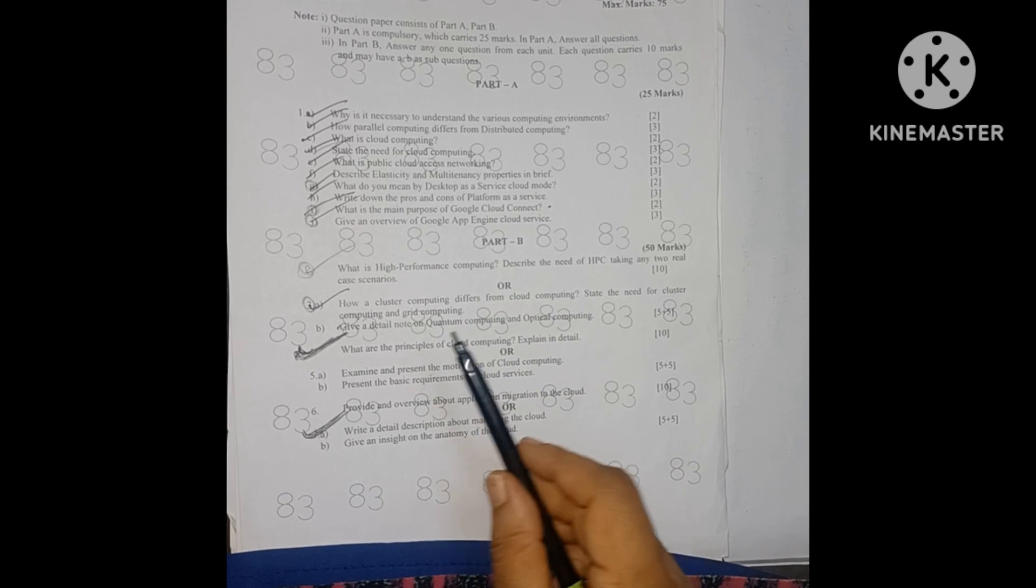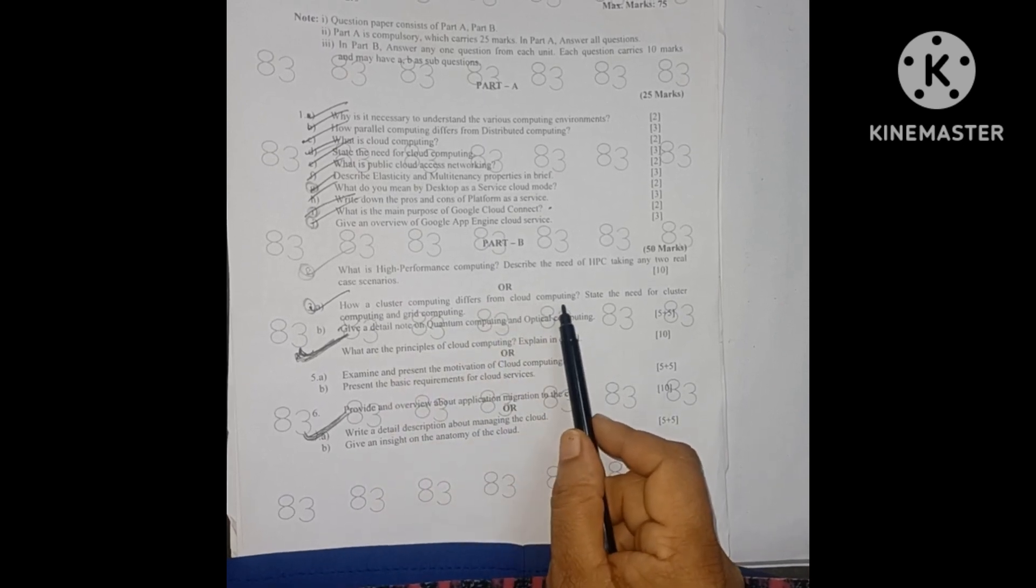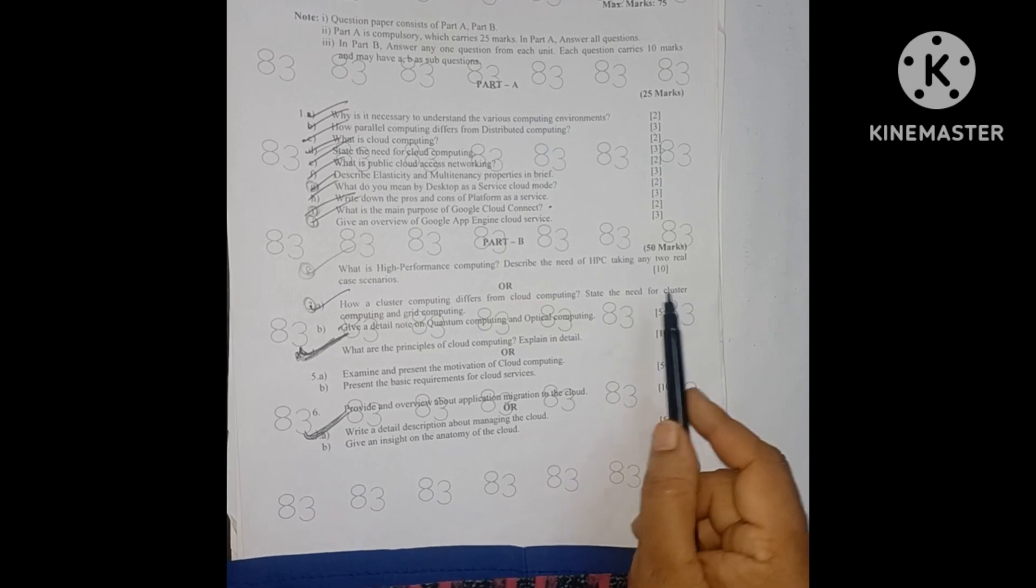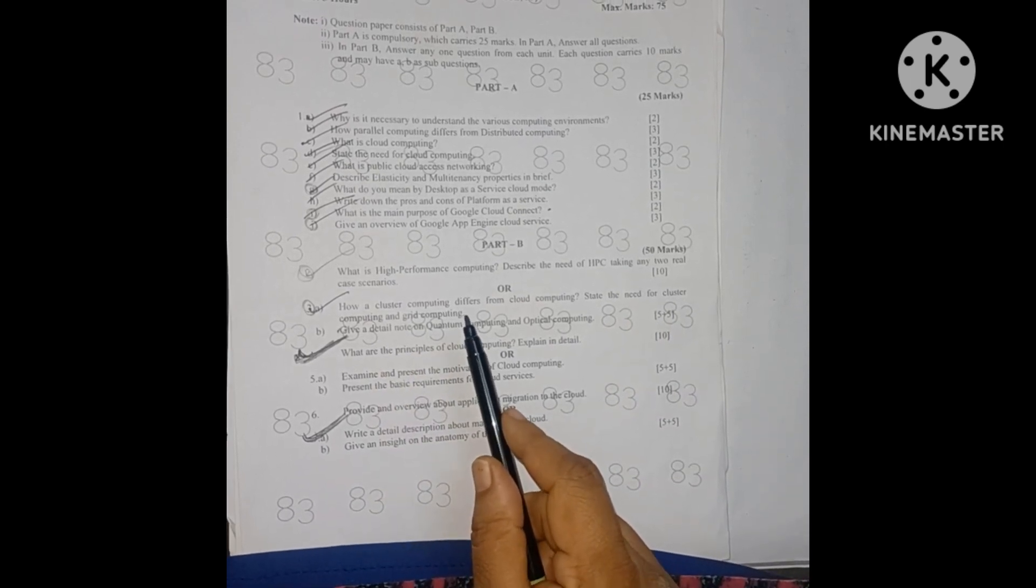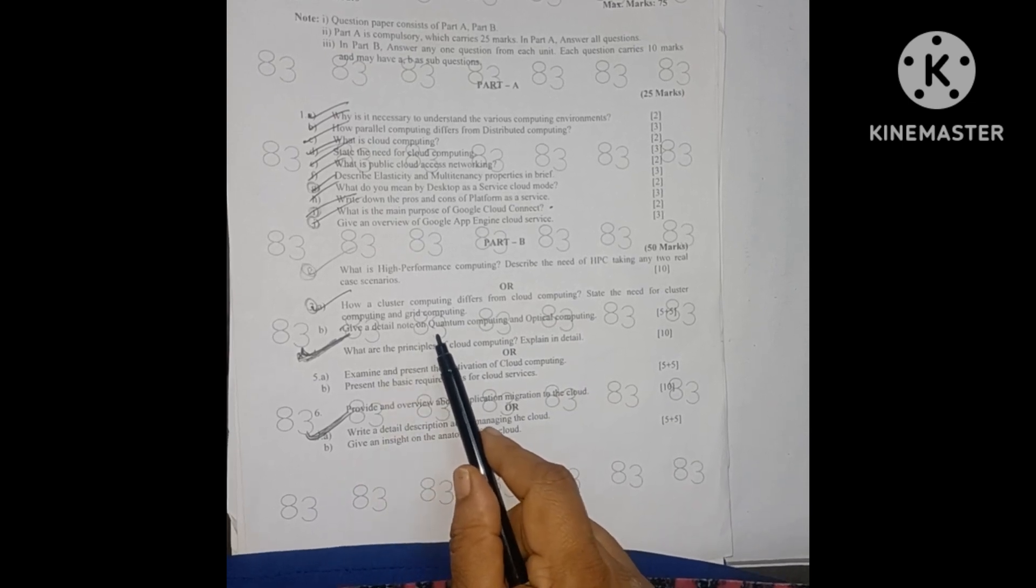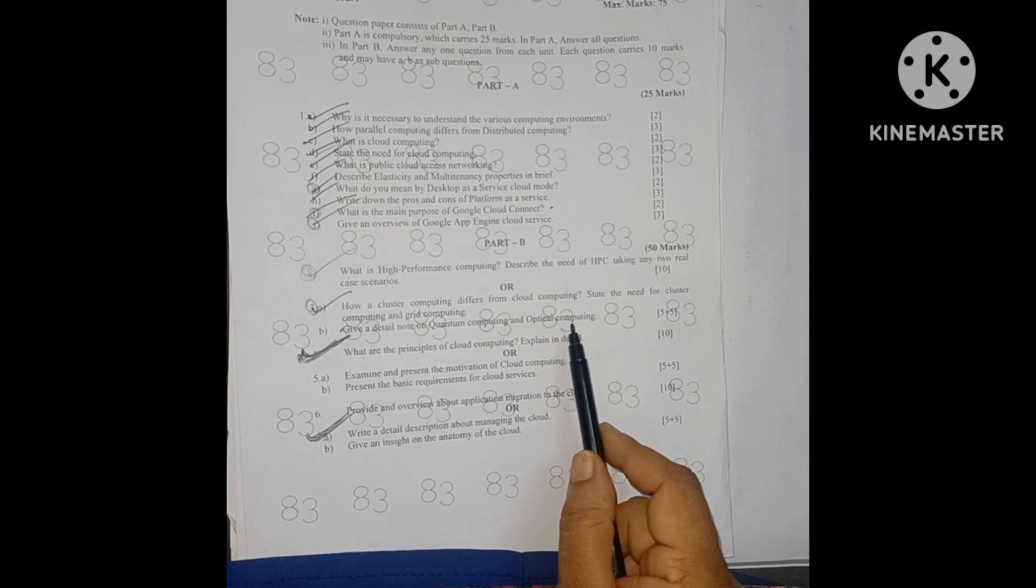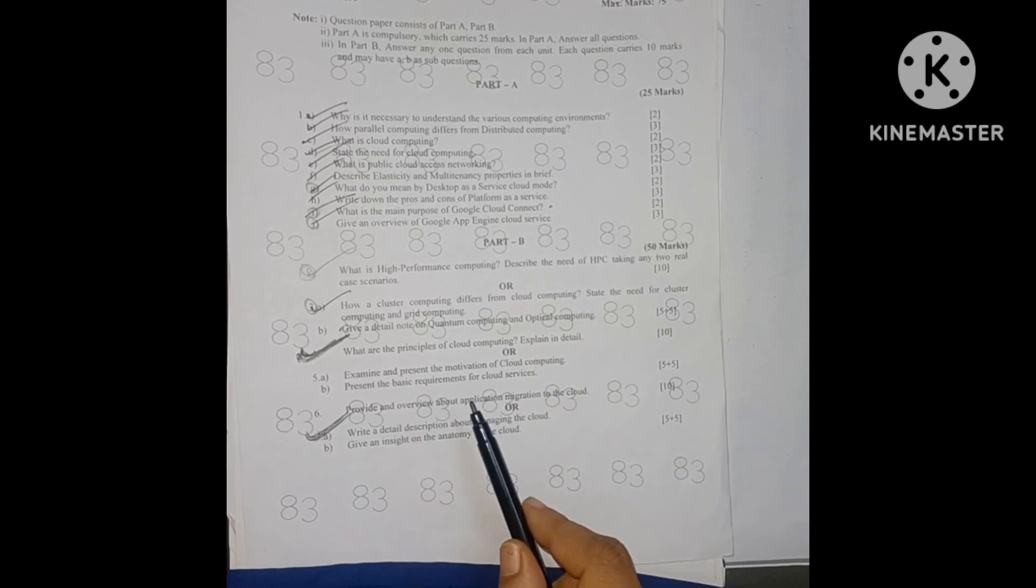That is a 10 marks question or internal choice: How does cluster computing differ from cloud computing? State the need for cluster computing and grid computing, 5 marks. Part B is give a detailed note on quantum computing and optical computing, 5 marks. 5 plus 5 equals 10 marks.